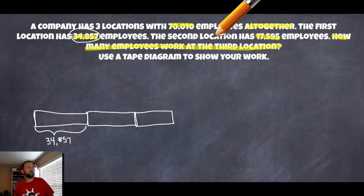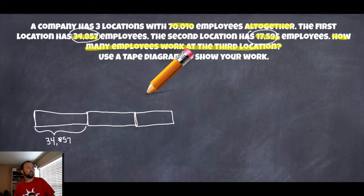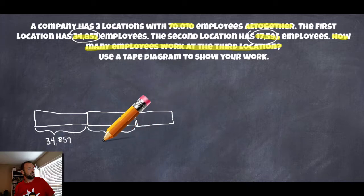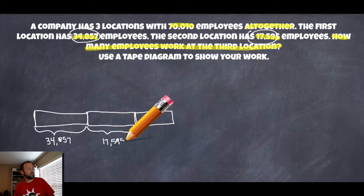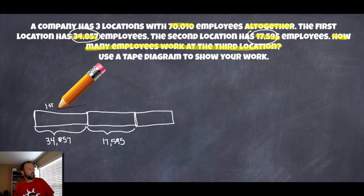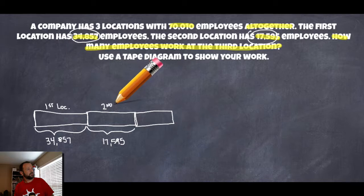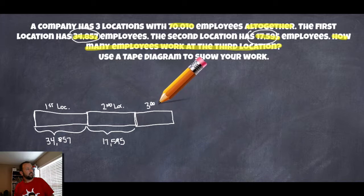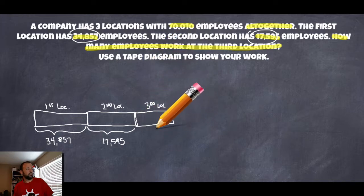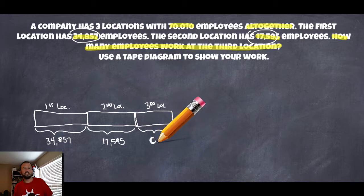We also know the second location has 17,595, so I'll draw that in as 17,595. I'll go ahead and label this as first location, second location, and then the third location. We don't know what the third location is — we don't know how many employees it has because the problem doesn't tell us. That's what we're going to find out. So I'm going to label this as C, because that's what we're looking for.